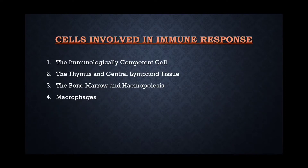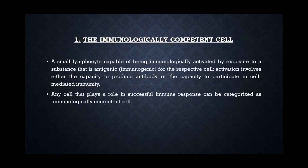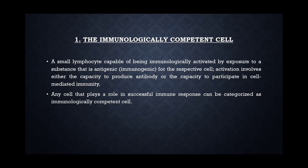Now, let's talk about some cells involved in immune response. First one, the immunologically competent cell. Immune competence refers to the ability of our body to react against any foreign element. Any cell that plays a role in a successful immune response can be categorized as an immunologically competent cell. For example, if any microorganism enters our body, the tissue macrophages engulf it and convey the first local response. Here, macrophages are considered as immune competent cells.